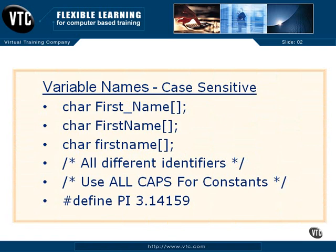Variable names are case sensitive. So there you can see 'first_name', 'First_Name', and 'char first_name' all in lowercase — those are all different identifiers. That would be very confusing inside your program when referring to those different first names with or without an underscore, or with uppercase characters. Those are all different to the language, and they would all be different locations in memory.